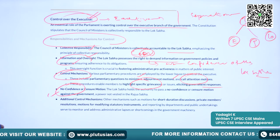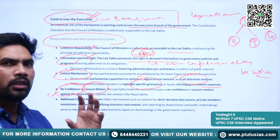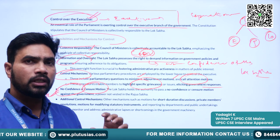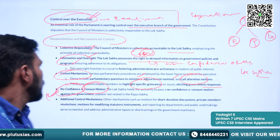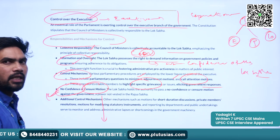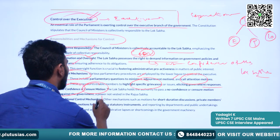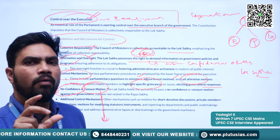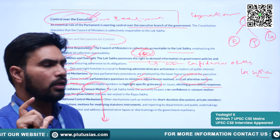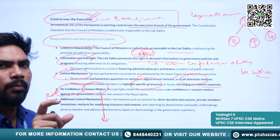Another important weapon in the hands of Parliament is the no-confidence motion or censure motion. Whenever Parliament is not happy with the actions of the government, members can move a no-confidence motion — if this motion passes, the government has to resign. A censure motion is basically a warning to the government that its performance is not up to the mark. All these methods are to ensure the accountability of the executive to the legislature.